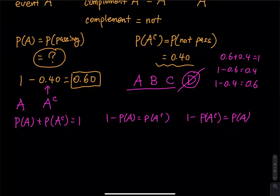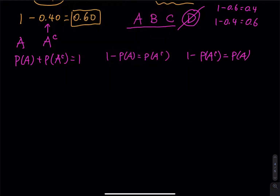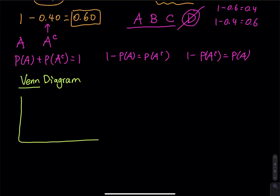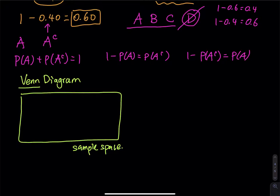Now let's talk about this using a Venn diagram, named after the English logician John Venn. In a Venn diagram, we have a sample space represented by a rectangle — that is everything. Inside it, event A is shown as a circle, and outside the circle is A^C, the complement.